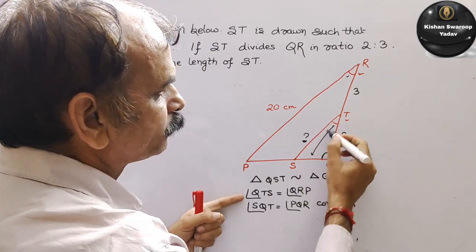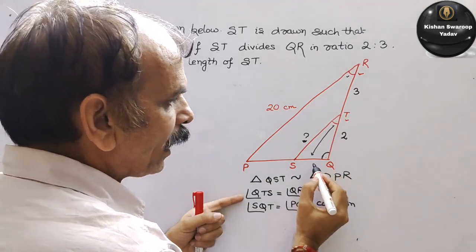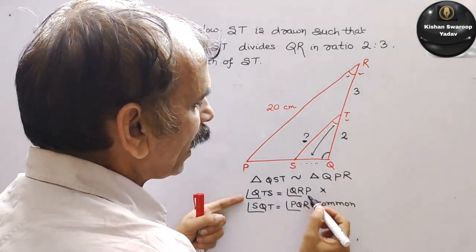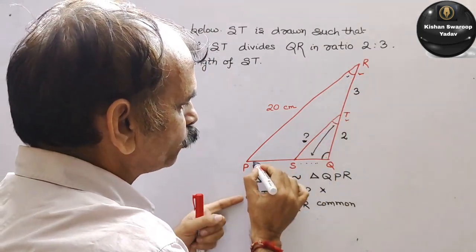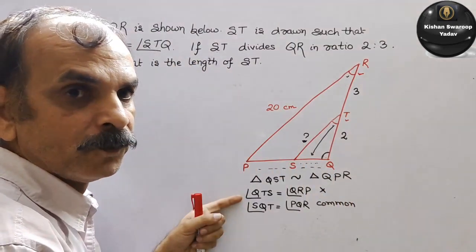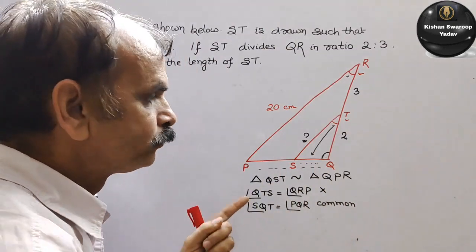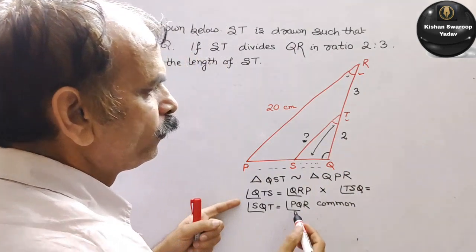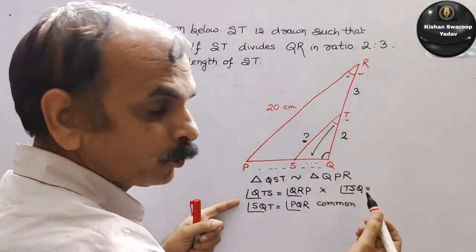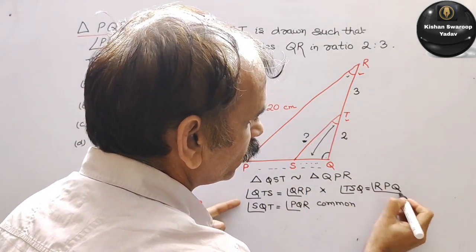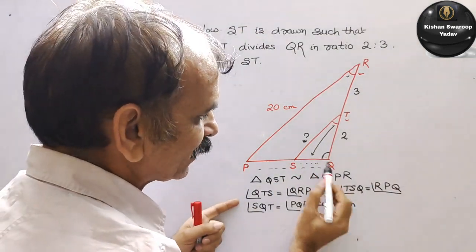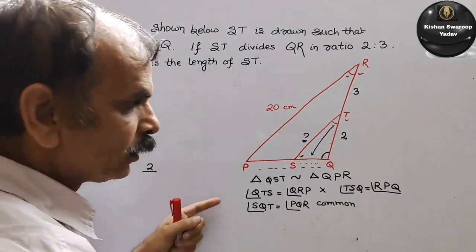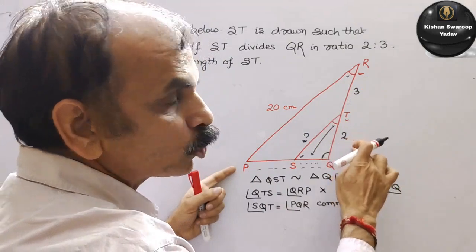Ab iske opposite sides ko dekhna hai dono ka. Toh dekho QTS — iska opposite side yeh hai, lekin yahan koi measurement nahi hai, toh we will not take this. Aur doosra hai aapka QRP — iska opposite side is this, poora wala — isme bhi koi measurement nahi hai, toh we will not take this. Toh ab aapko third side likhni hai. Chote wale ka T SQ — angle TSQ is equal to RPQ — center mein S hai. Iska opposite side mein 2 likha hai, toh 2. Aur yahan P hai toh opposite side poora hai — 2 plus 3 is 5.